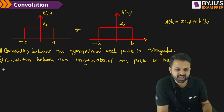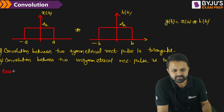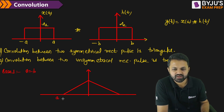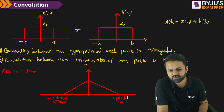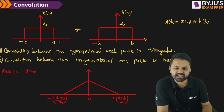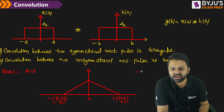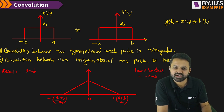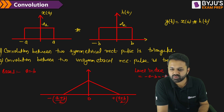Case 1: when A equals B, it is symmetrical. You will get a triangular shape. When A and B are both equal, the lower limit is minus A minus B, which equals minus 2A, and the upper limit is plus A plus B, which equals plus 2A. The intermediate value where the slope changes: take the lower limit of the first pulse (minus A) and the higher limit of the second pulse (plus B). Since A equals B, you get 0. You can also take the higher limit of the first (plus A) and the lower limit of the second (minus B); again A equals B gives 0.